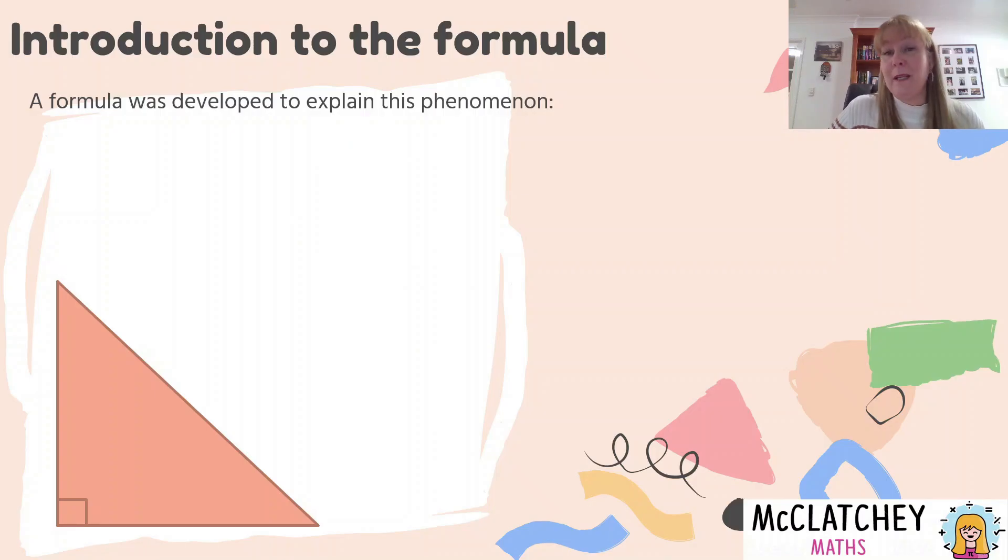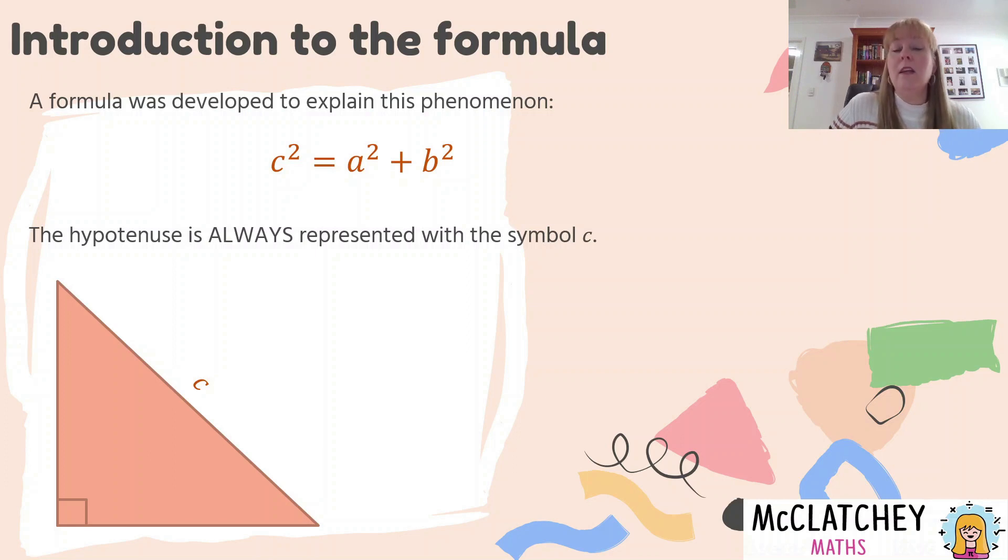Now a formula was developed to explain this strange phenomenon of the side when it's extended out becoming a square, and that hypotenuse's square is equal to the sum of the square of the other two sides. And this is the way the formula looks: c² = a² + b². Now it's always important to remember, this is one of the big things I want you to take away from this video today, is that the hypotenuse is always represented with the symbol c. So you'll see in this formula, c² is on its own on the left hand side of the equation or the formula, and on the other side of the equation is a² + b².